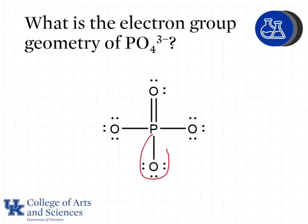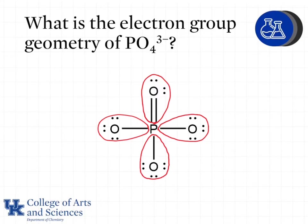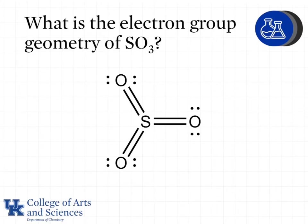For PO4³⁻, phosphorus has four groups around the central atom, so we have tetrahedral geometry. The lone pairs are on the terminal oxygen atoms and do not affect the geometry around phosphorus. We treat the single and double bonds exactly the same way — each represents one group — giving a total of four groups even though there are five bonds to phosphorus. Note that this is not a structure you would be expected to draw, but given the structure you should be able to determine the geometry.